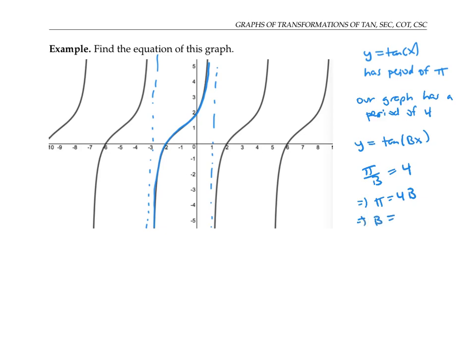And so b is pi over four. So our graph is probably more closely related to y equals tan of pi over four x.